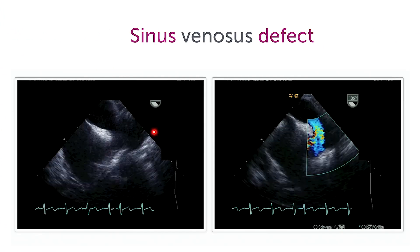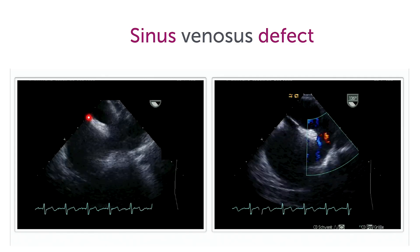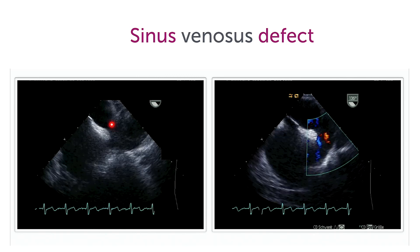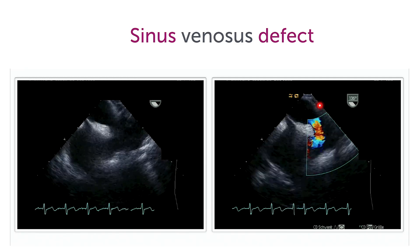Let me walk you through the different parts of the heart that we can see here. This is the SVC. Here is the right atrium. This is the interatrial septum, which is intact, with the so-called primum septum and secundum septum, which is a little bit thicker. And right here, actually almost a communication between the SVC and the left atrium, is the defect. Here you can see that very nicely in color Doppler as well.